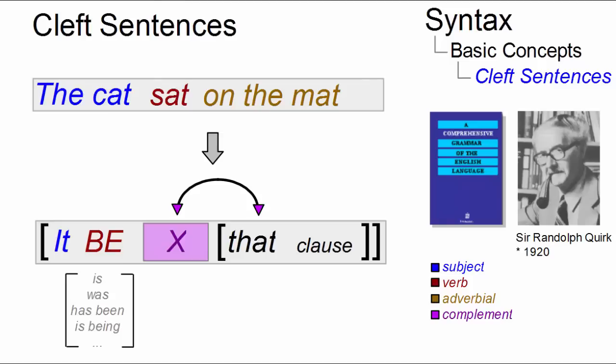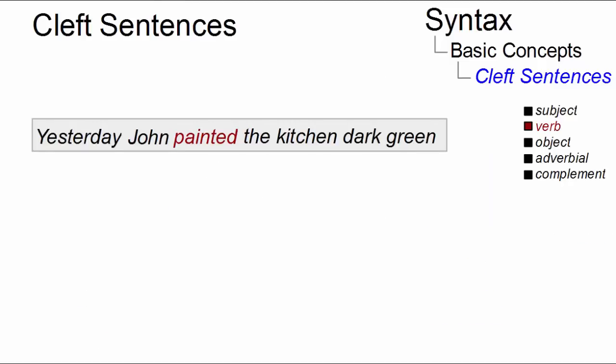Let's illustrate this using the simple sentence: 'Yesterday John painted the kitchen dark green', where 'yesterday' is an adverbial, 'John' the subject, 'the kitchen' the object, and 'dark green' an object complement.